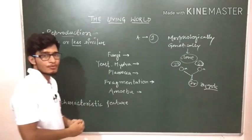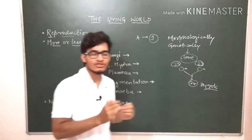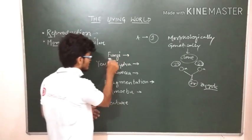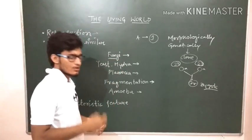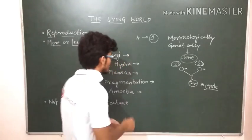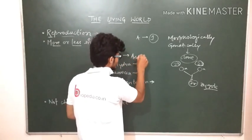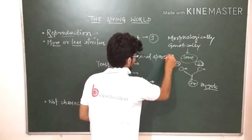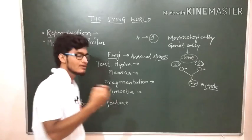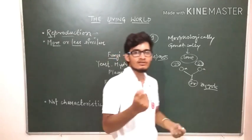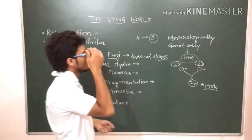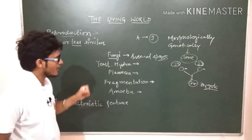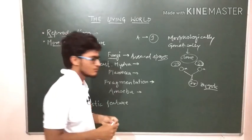Let's talk about some important examples given in NCERT. For example, there is fungi. How does fungi reproduce? There are millions of asexual spores.